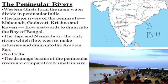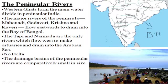These rivers form estuaries. The drainage basins of peninsular rivers are comparatively small in size. When you compare them with Himalayan rivers, the Himalayan rivers have larger deltas and basins because they hold more water — that is why peninsular rivers have smaller basins.